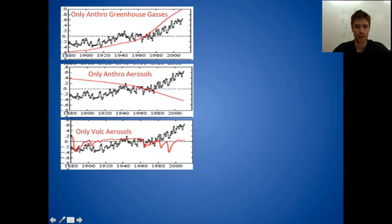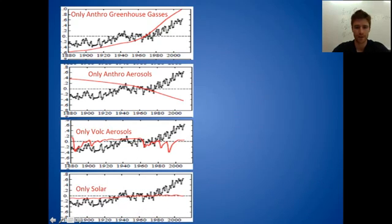If only volcanic eruptions were causing the temperature to change, then the temperature should have been relatively flat. But whenever there's a big volcano, it should dip down. And so there's been some big volcanoes in the second half of the 20th century that should have caused some big dips in temperature. And if only solar activity was controlling the temperature, then it should have been a little bit cooler early in the 20th century and then a little bit warmer later in the 20th century.